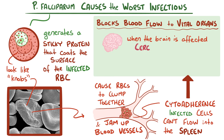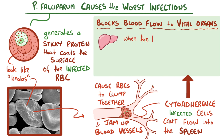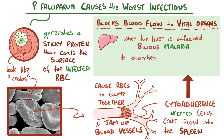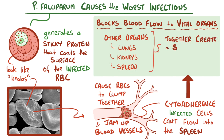Between hemolytic anemia and ischemic damage from blocked blood flow, organ failure can set in pretty quickly. When the brain is affected, it's termed cerebral malaria, and it results in altered mental status, seizures, and coma. When the liver is affected, it's termed bilious malaria, and it results in diarrhea, vomiting, jaundice, and liver failure. Other commonly infected organs include the lungs, the kidneys, and the spleen, which together create a sepsis-like clinical picture that can eventually lead to death. Together, all these scenarios are called complicated malaria.